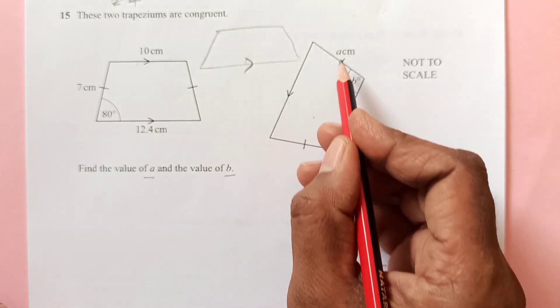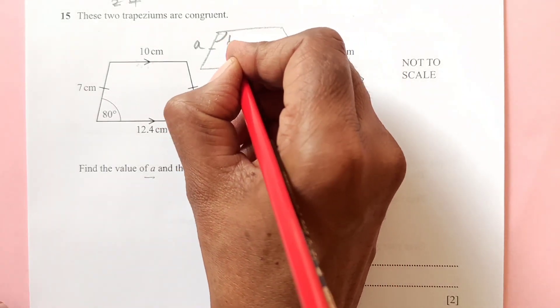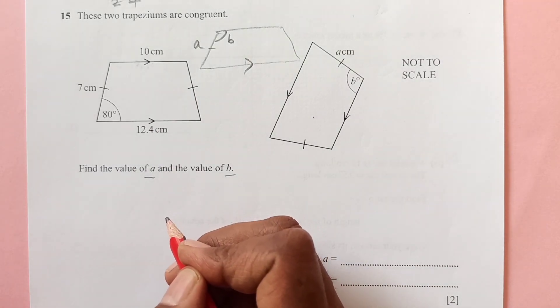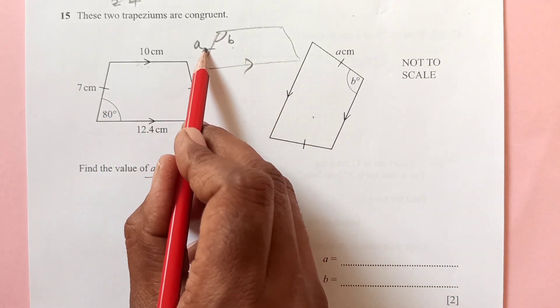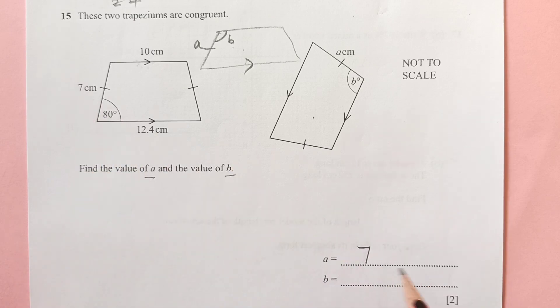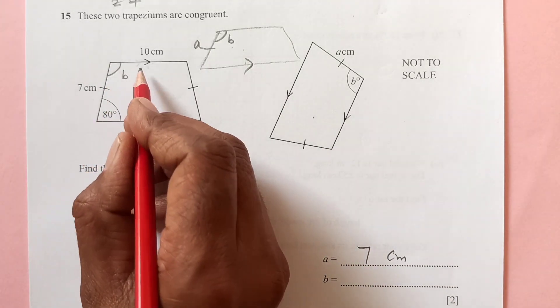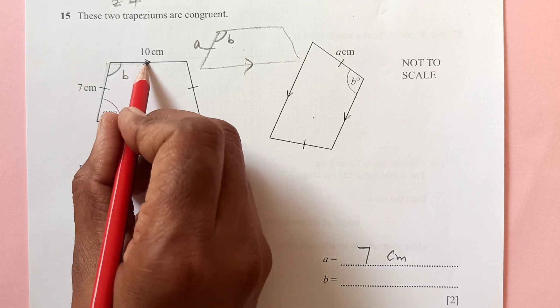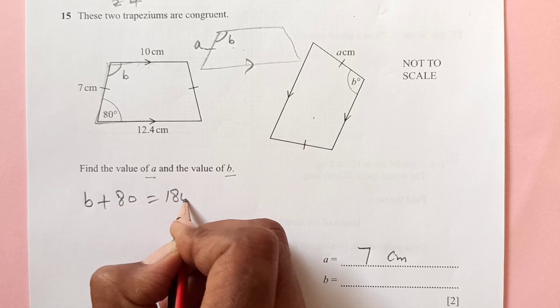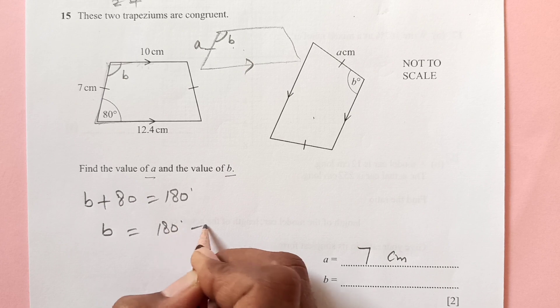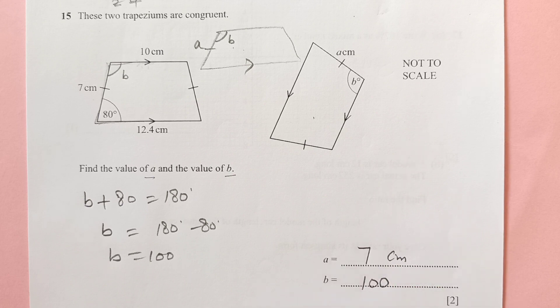This side is A. And this angle when you bring it here, this angle is B here. So now you see if you compare this and this, this is the corresponding side, so A is 7 centimeters. And now about B, as this is a C shape, C shape is co-interior angle. Co-interior angles mean sum of these two angles will be equals to 180. So B is 180 minus 80, that is 100. So value of B is 100 degrees.